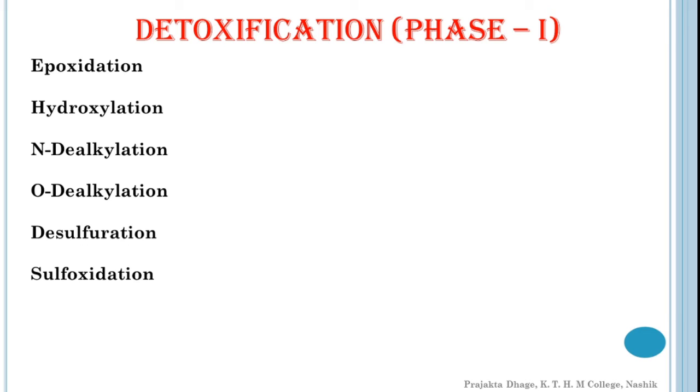Now, the next one is reduction. Although insects contain reductases catalyzing the reduction of xenobiotics, reduction is less common than oxidation. Three types of reduction reactions, that is nitroreduction, azoreduction and aldehyde or ketone reduction, are known to occur in insects. An NADPH-dependent nitroreductase has been reported in the soluble fraction or cytosol of adult female houseflies, which reduces parathion to aminoparathion. The reductase activity is not affected by the presence of oxygen.